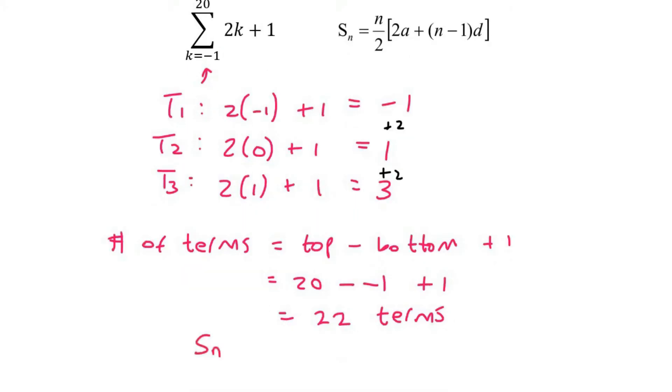Now it's just a matter of filling in, so that's just going to be 22 terms. a is term one, which is negative one, 22 minus one, and the common difference of two. So we end up with a final answer of 440.